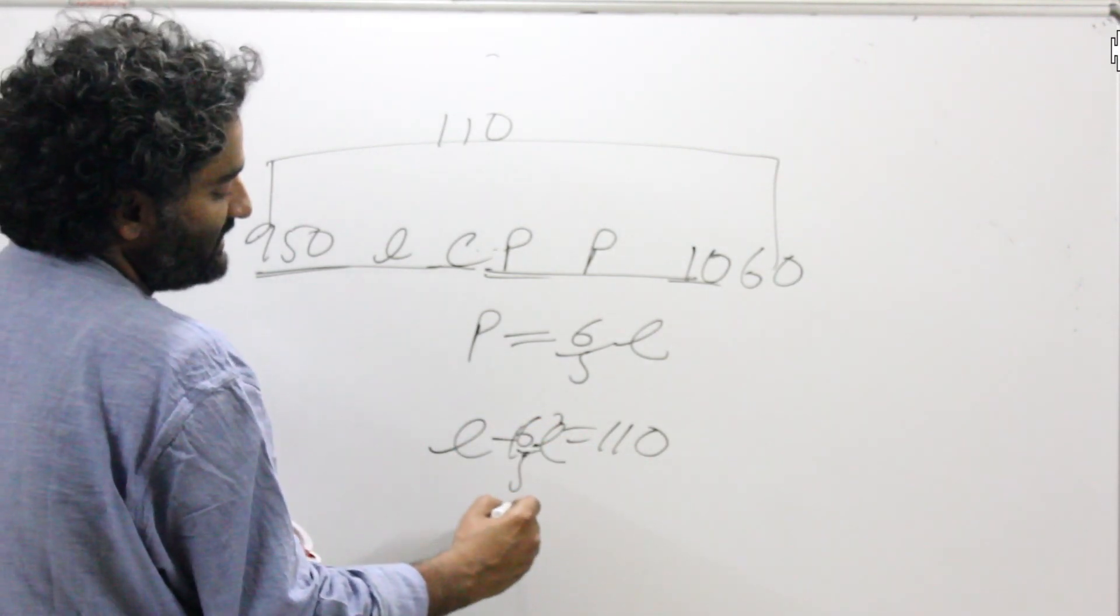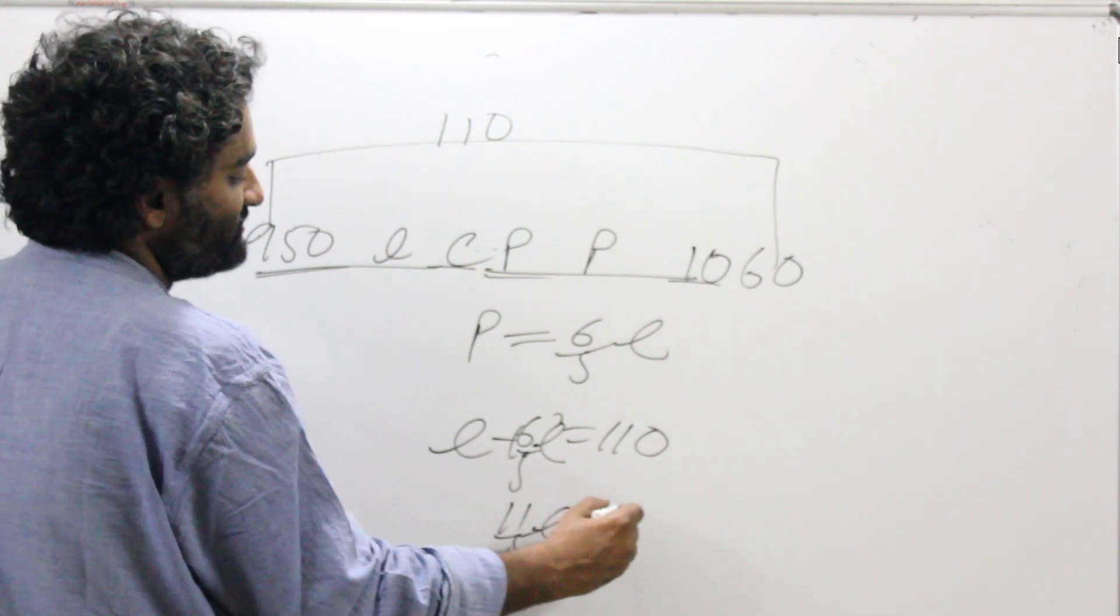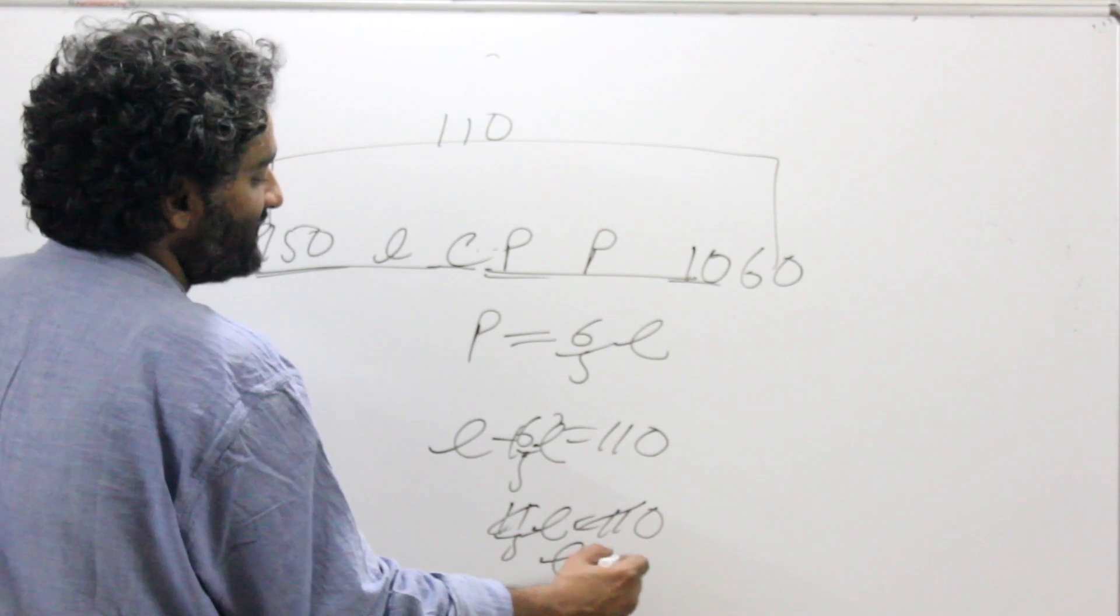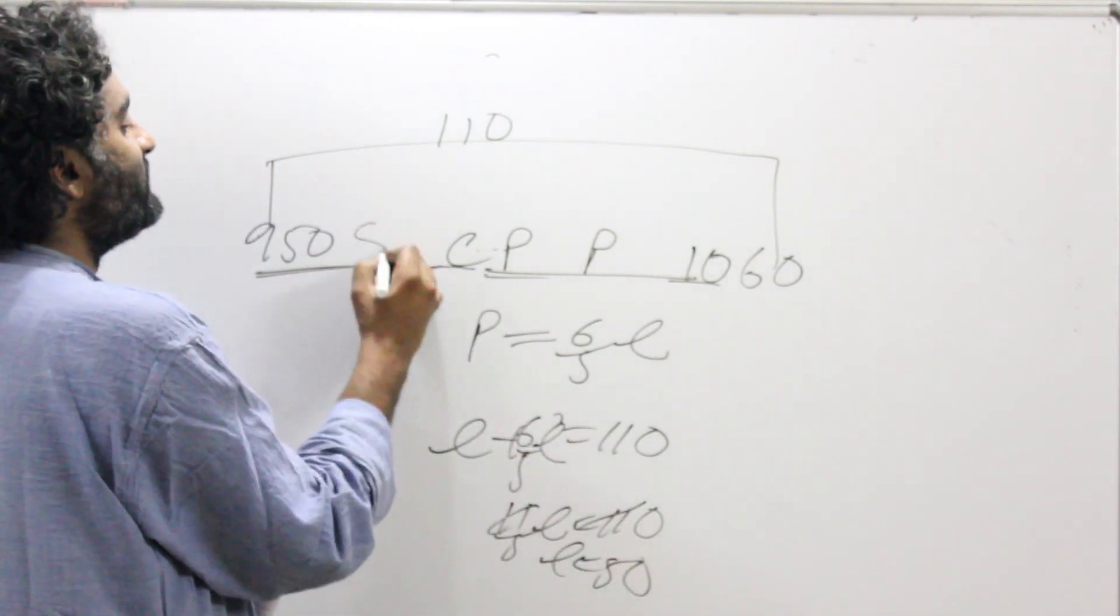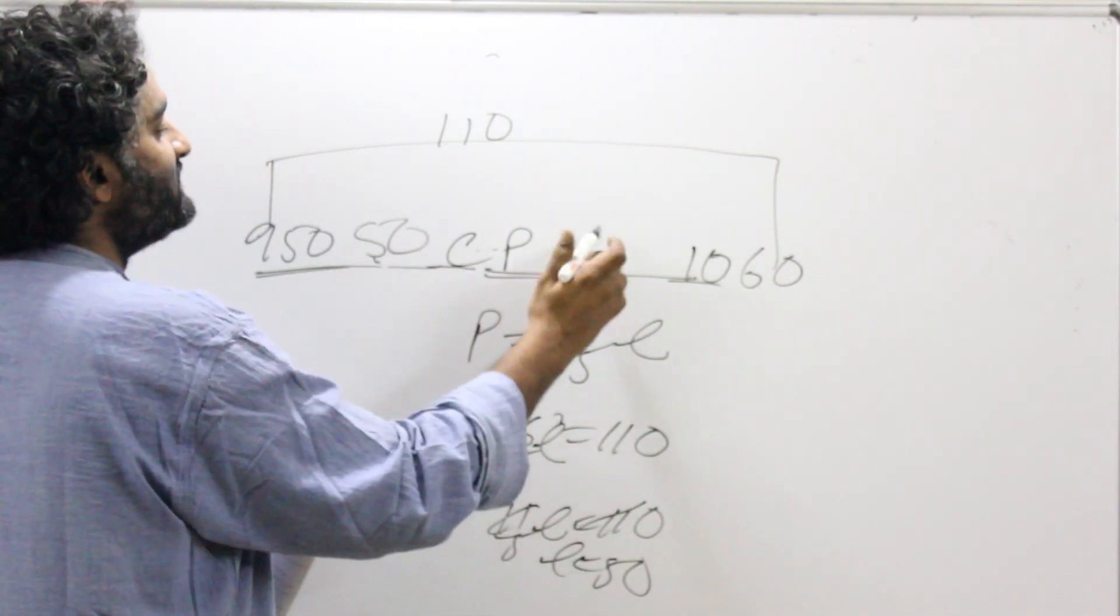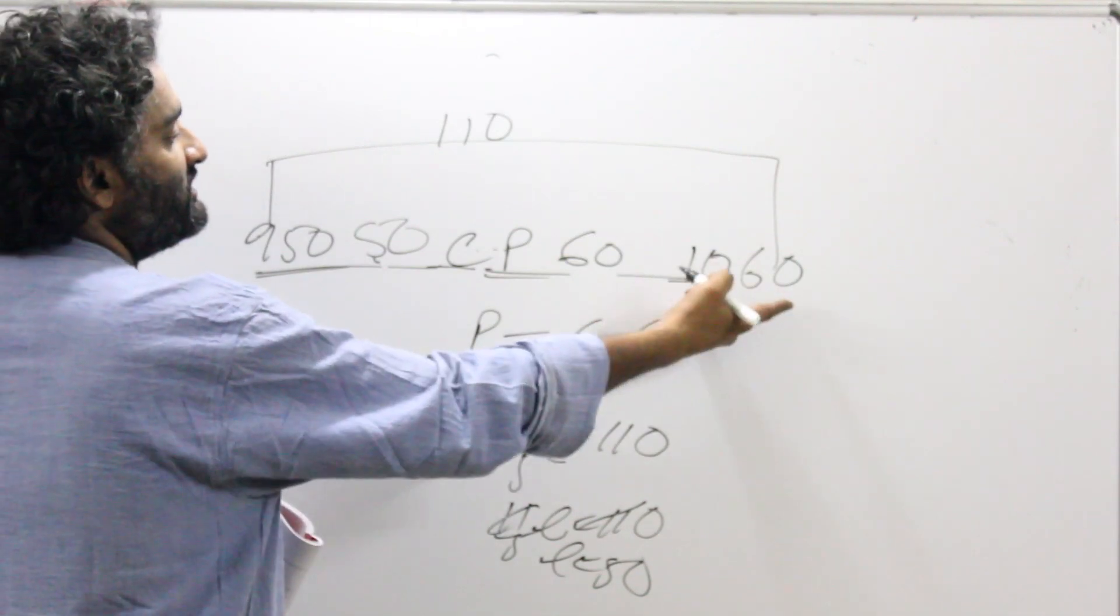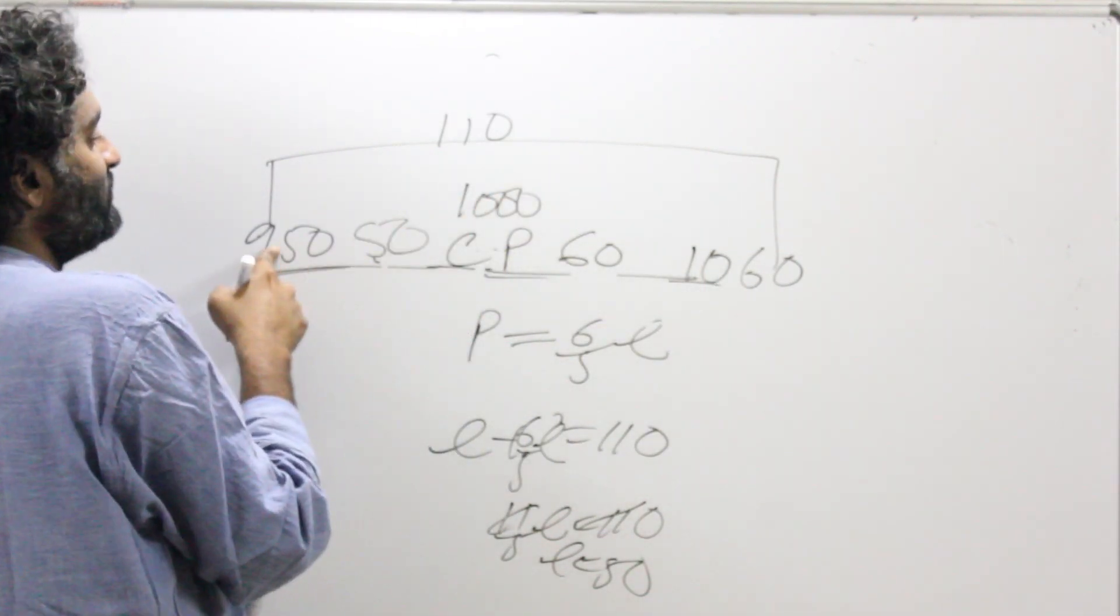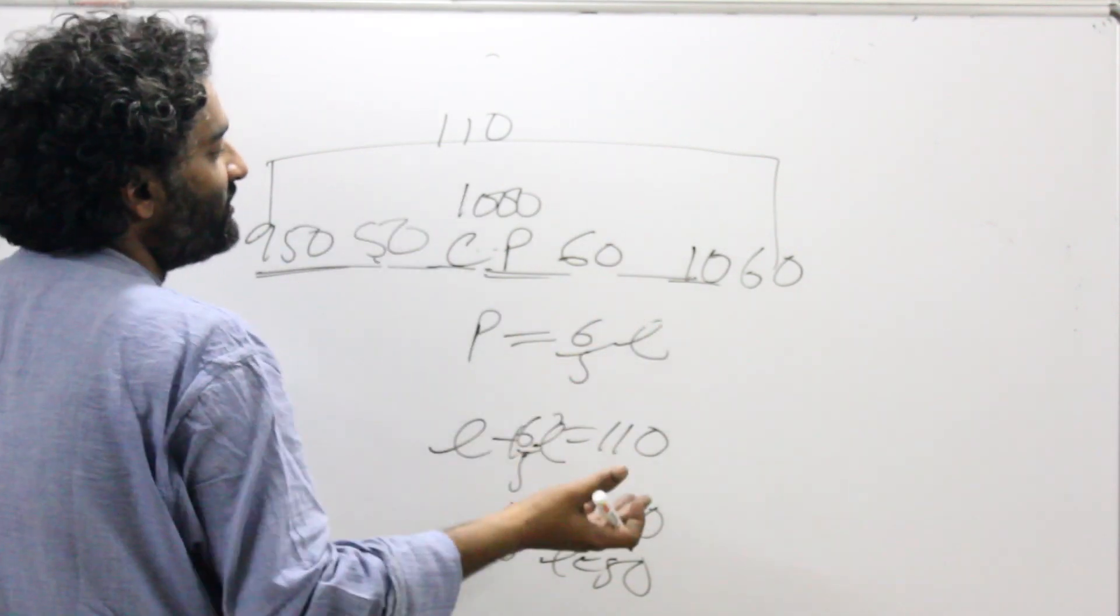This gets cancelled and you get loss as 50. So this is 50, and 20% more than that, this becomes 60. 1060 minus 60 you get 1000; 1000 minus 50 you get 950. So that was another way of doing it.